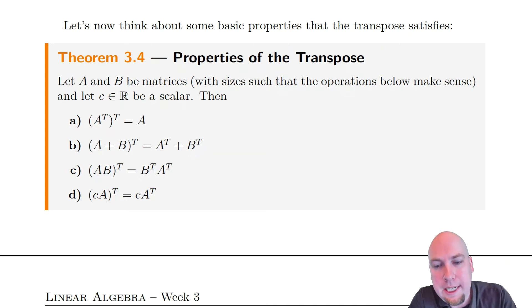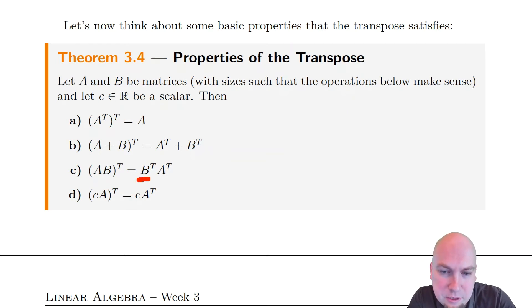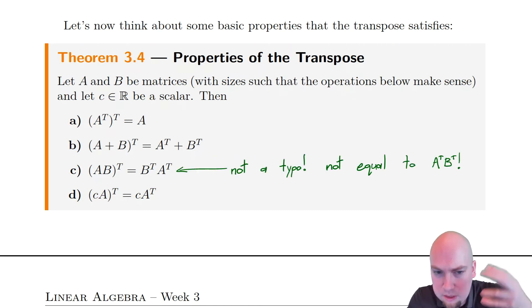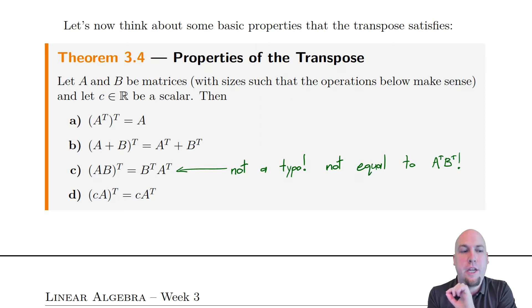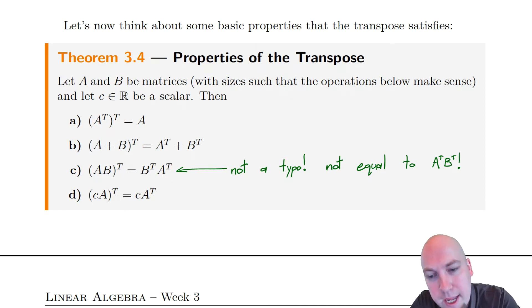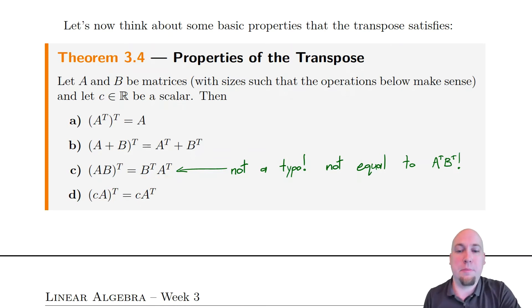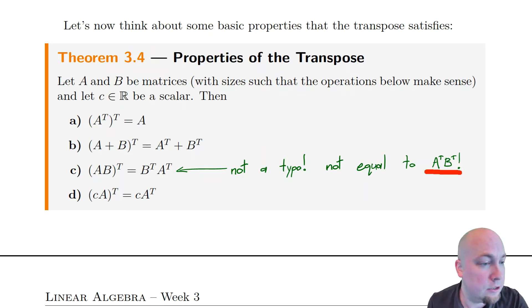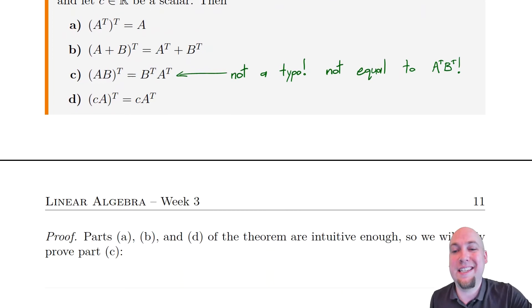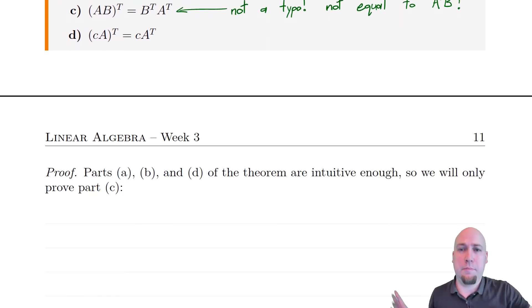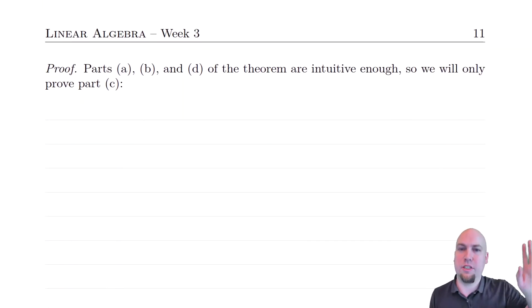The surprising property is property c. If you do a product and then transpose, you get the same thing as transposing individually and then multiplying — but you have to be really careful: the order of the multiplication changes. So this is not a typo: when I do A times B and then transpose, what I get is B transpose times A transpose. The transpose swaps the order of multiplication. This is not the same thing as A transpose times B transpose.